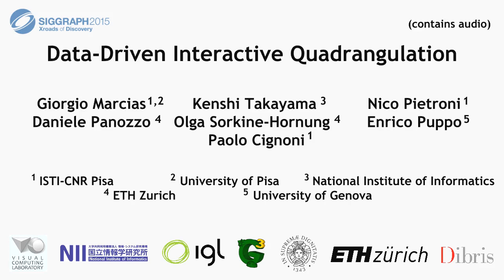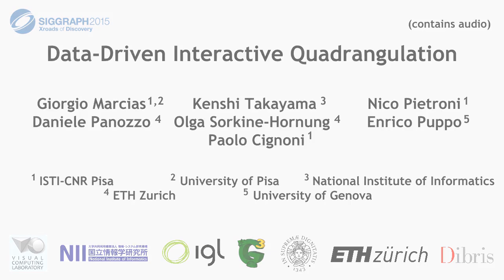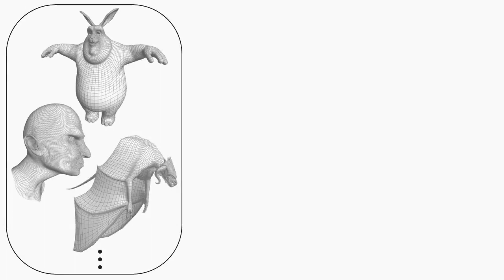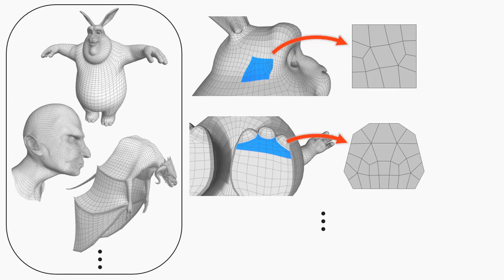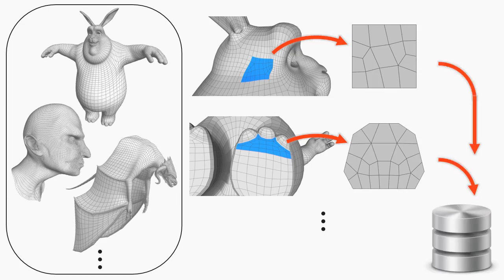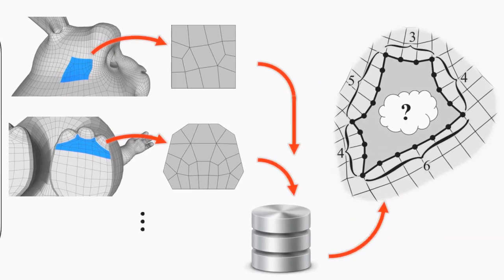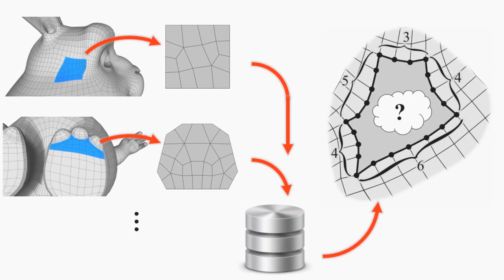We propose a data-driven approach to interactive quad triangulation. Starting from a large set of existing quad meshes, we extract local patch structures and store them in a database. This database is then queried later in an interactive retopology phase.